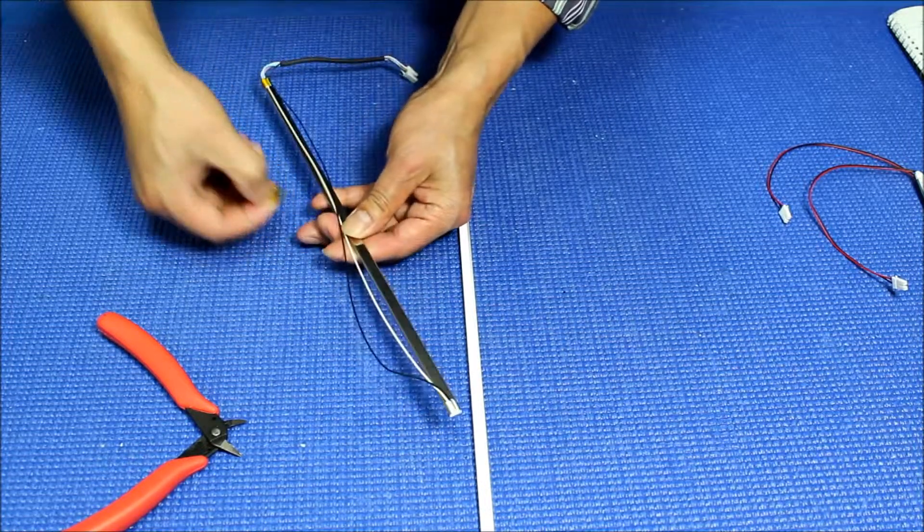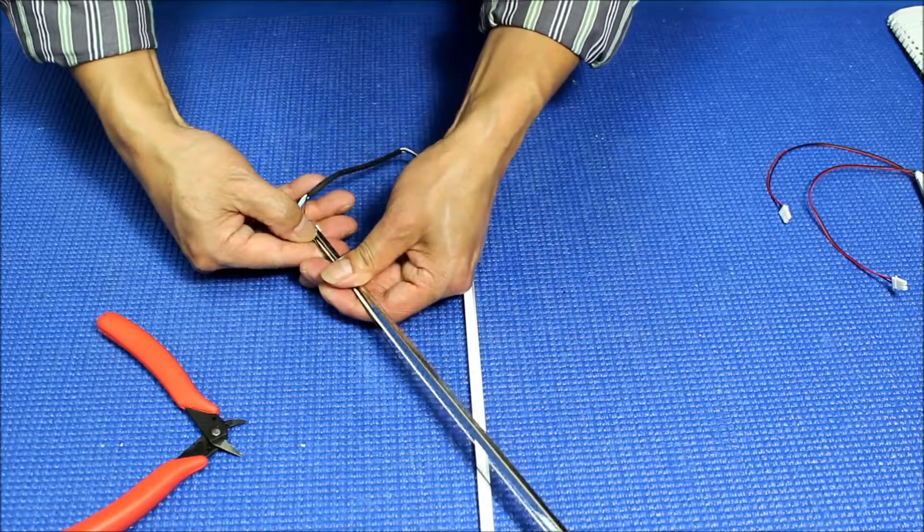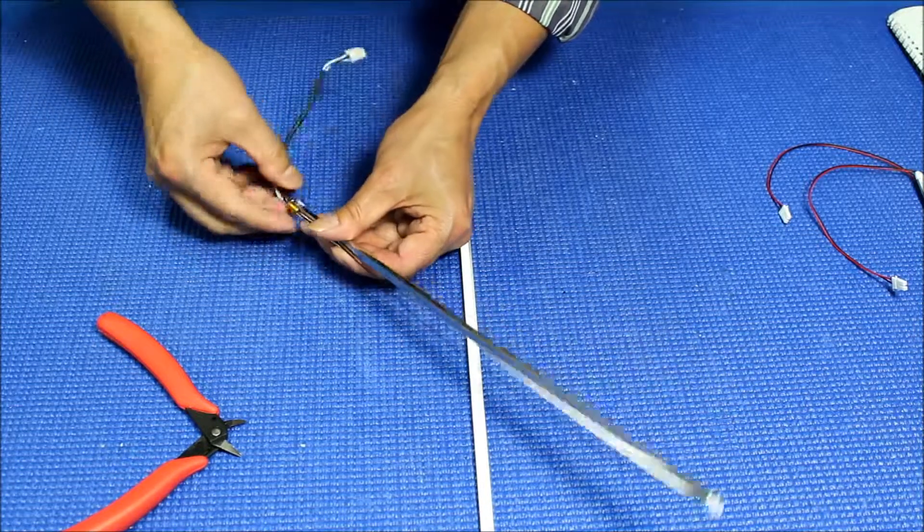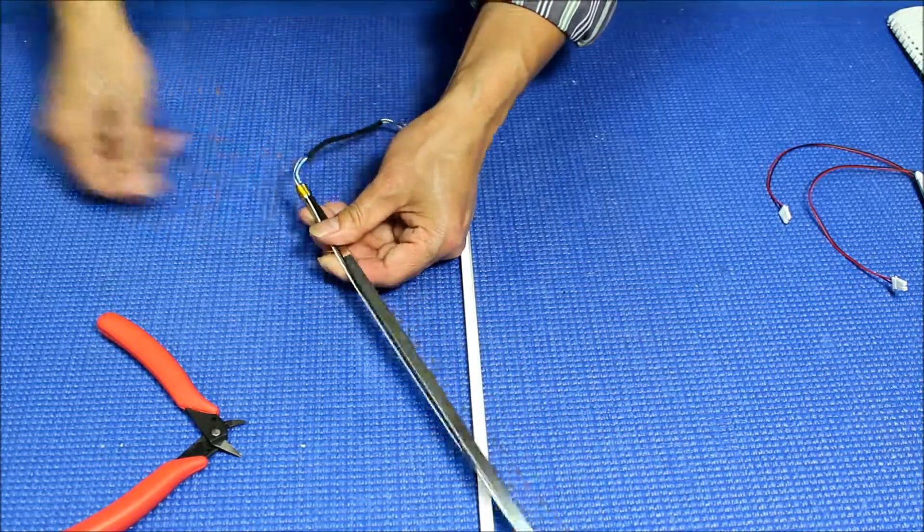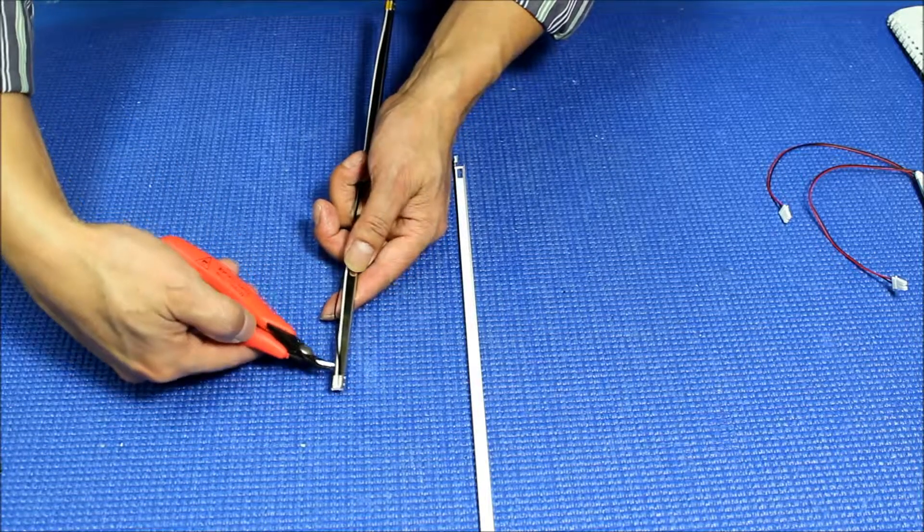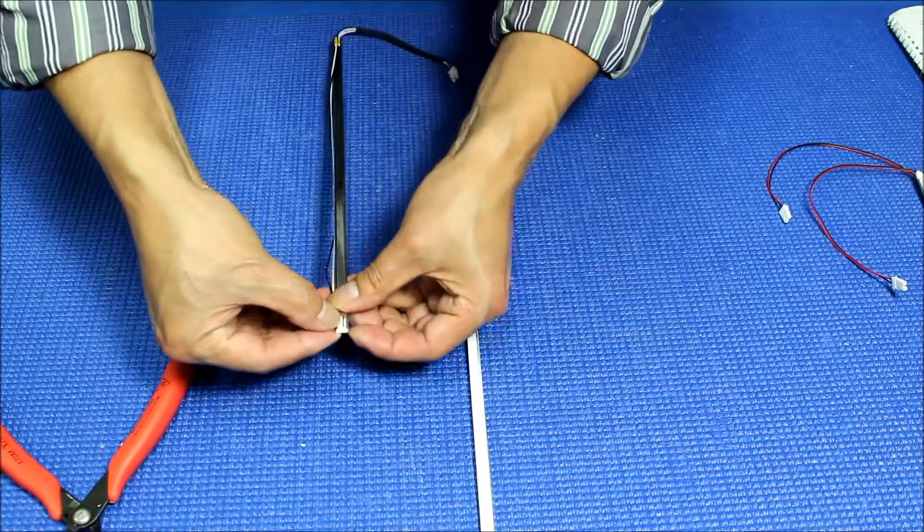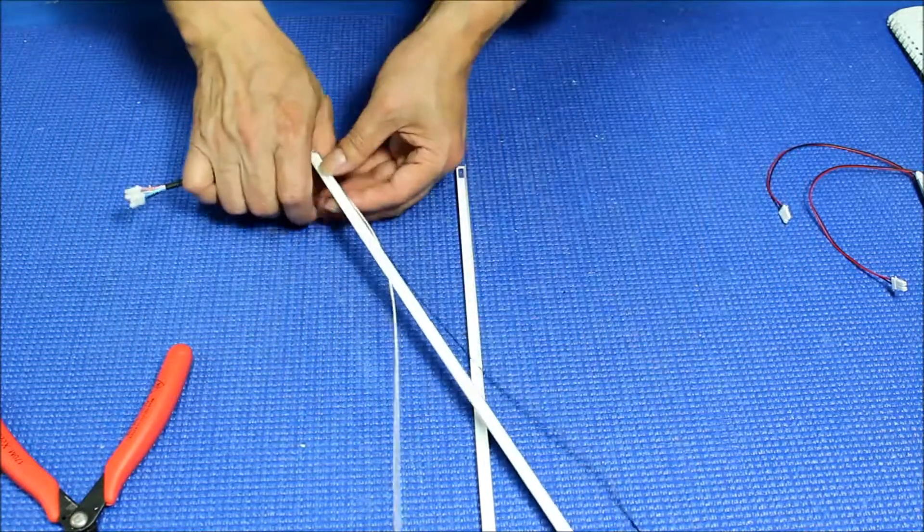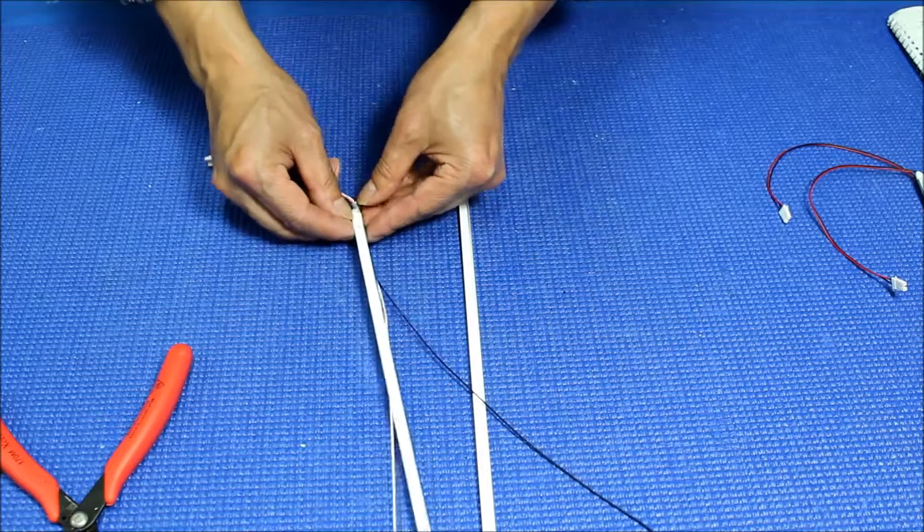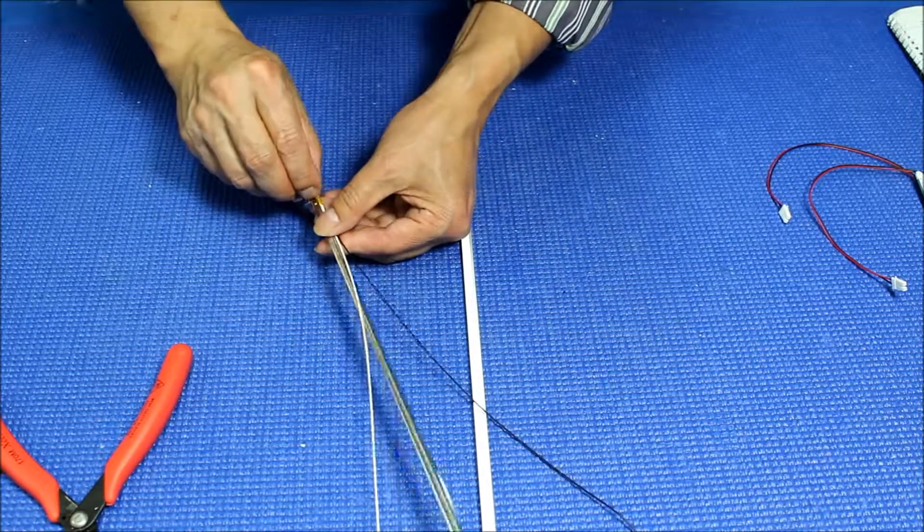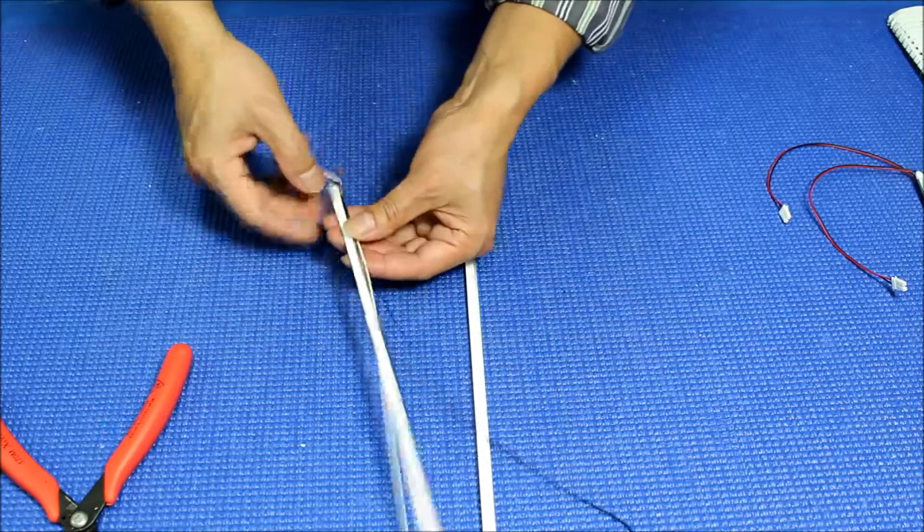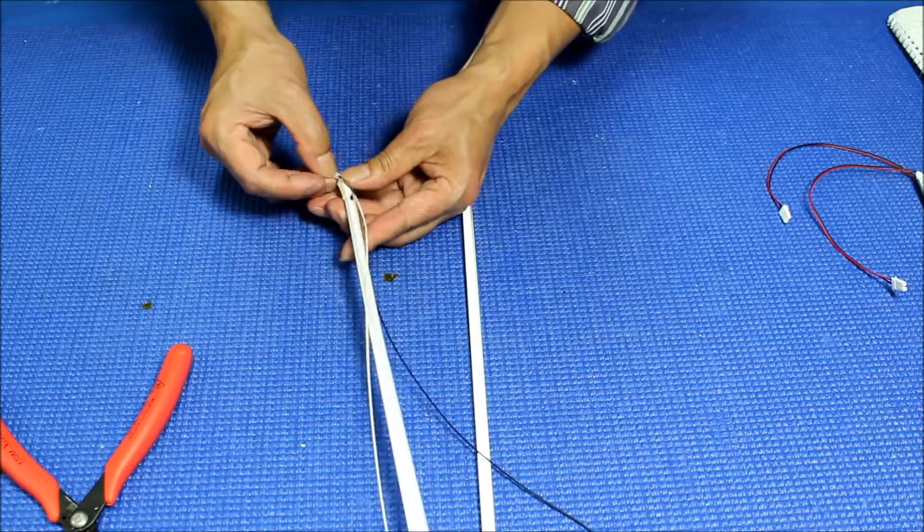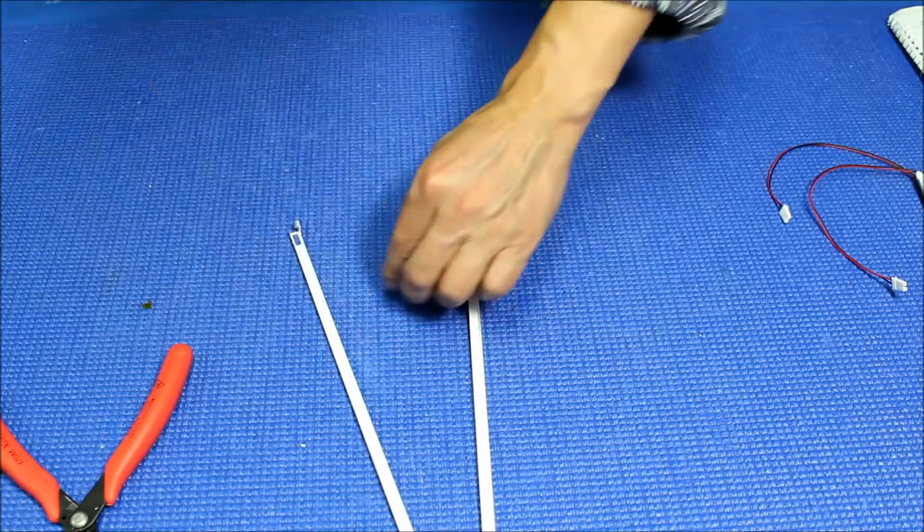Do the same thing on the other one. Just cut it, open up, push it out. Do the same thing on this end. A lot of tips here. Let me remove that. All right, it's out. So both are out.